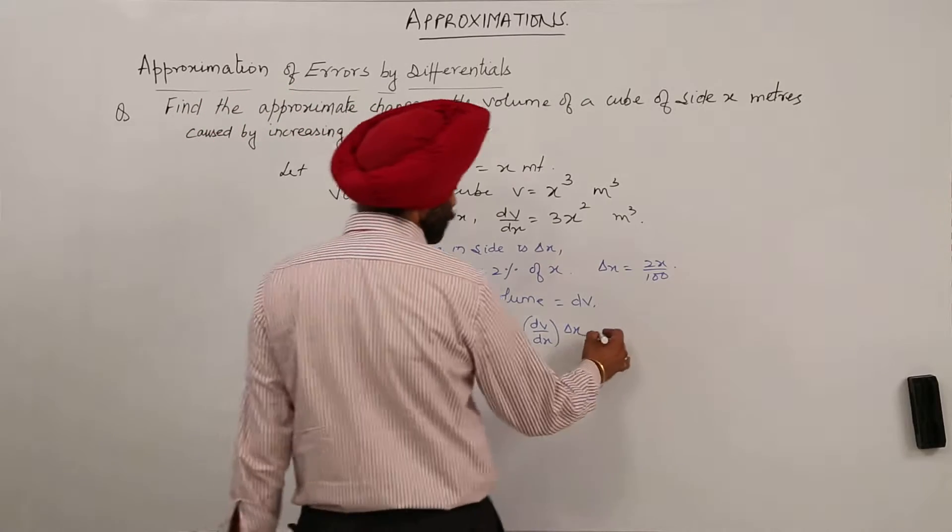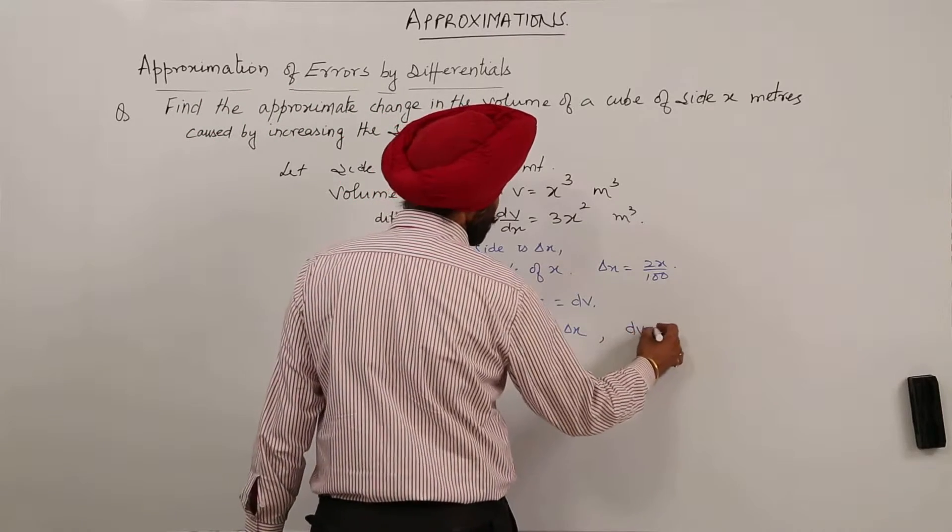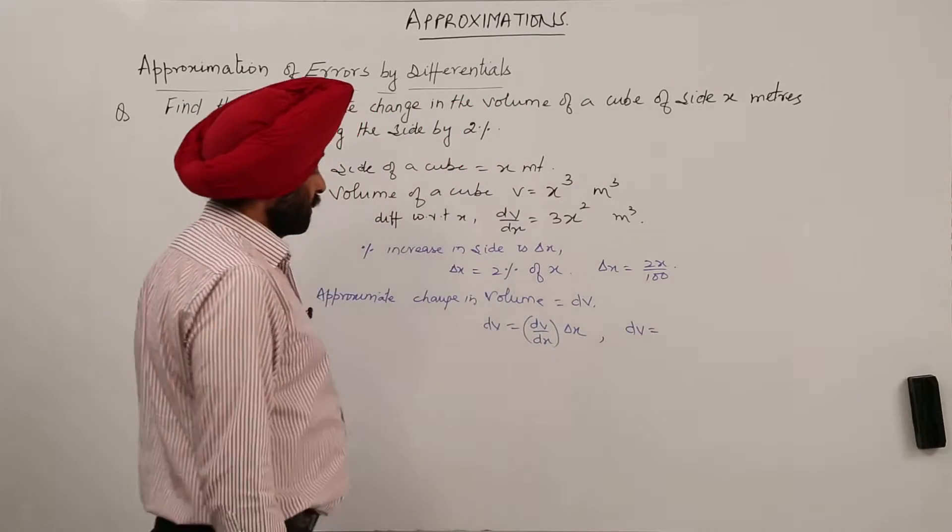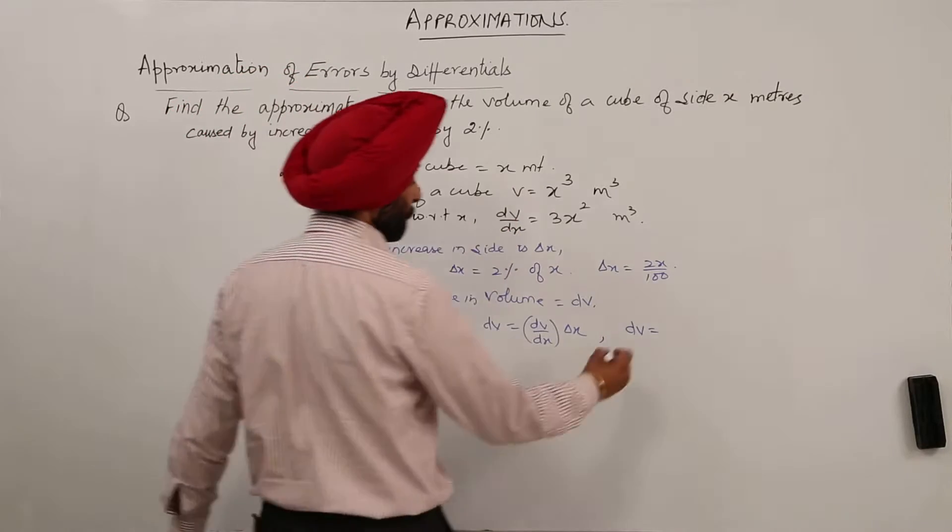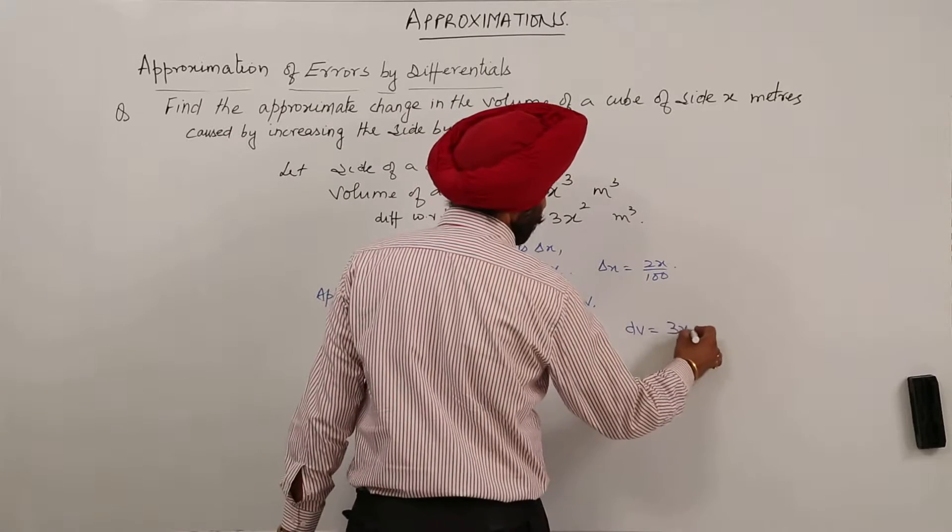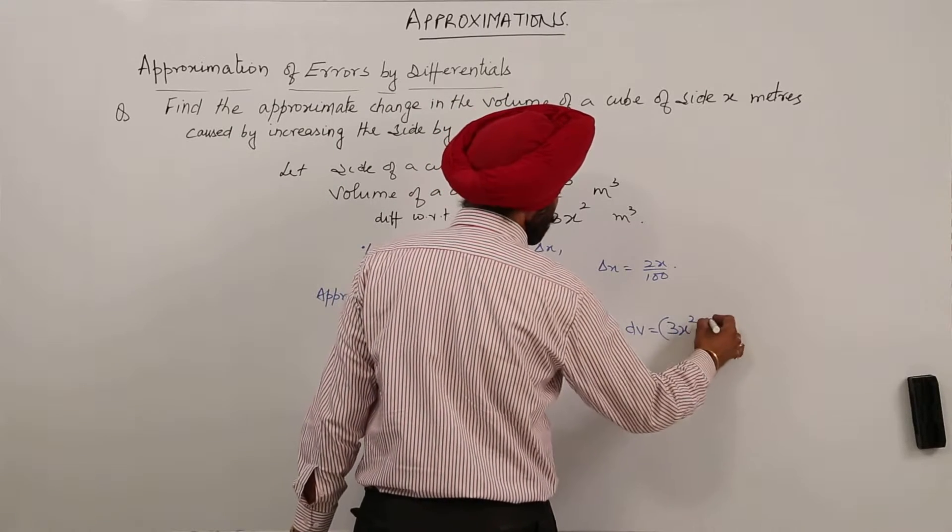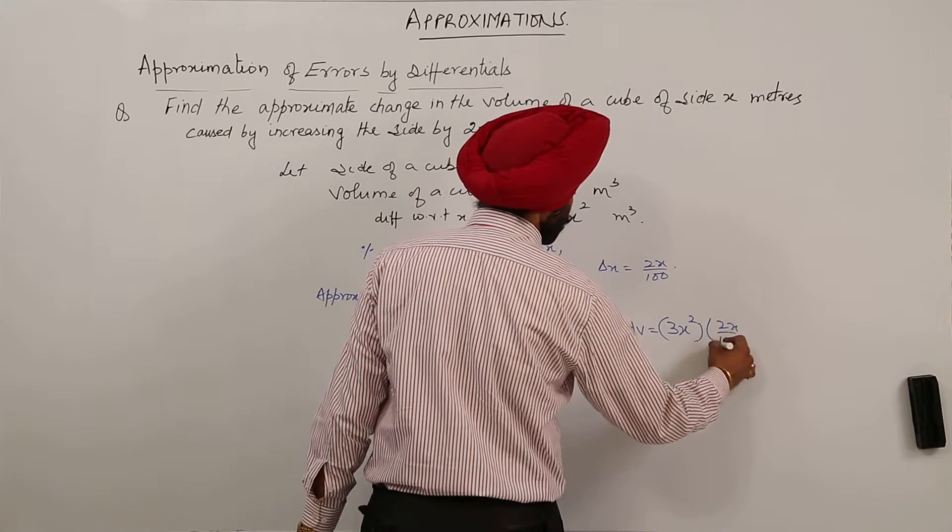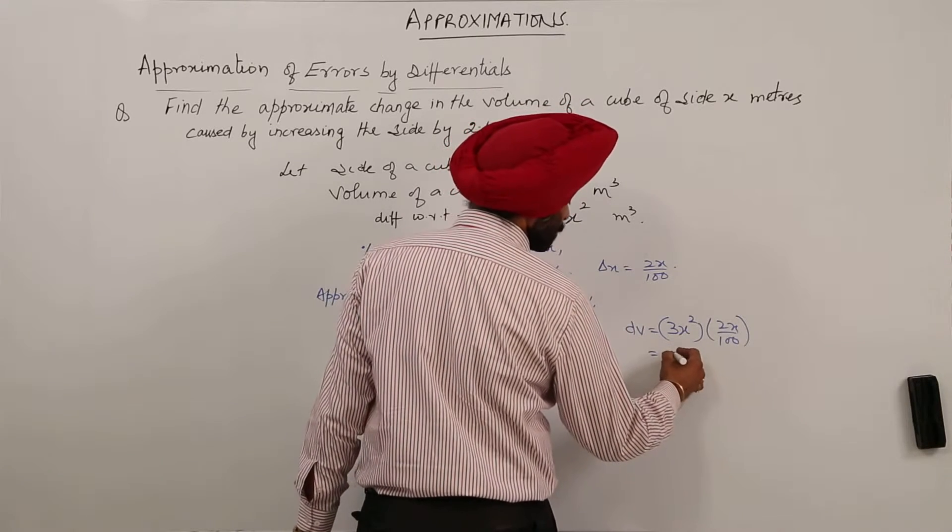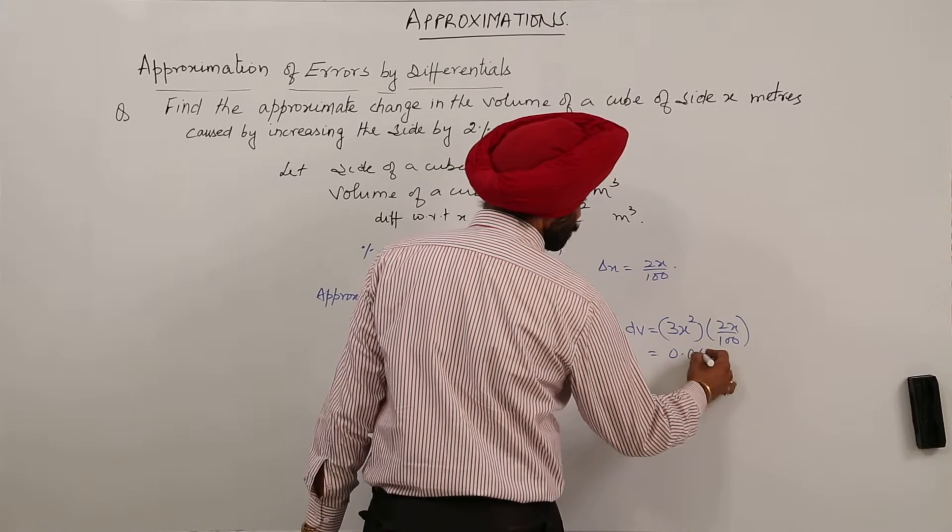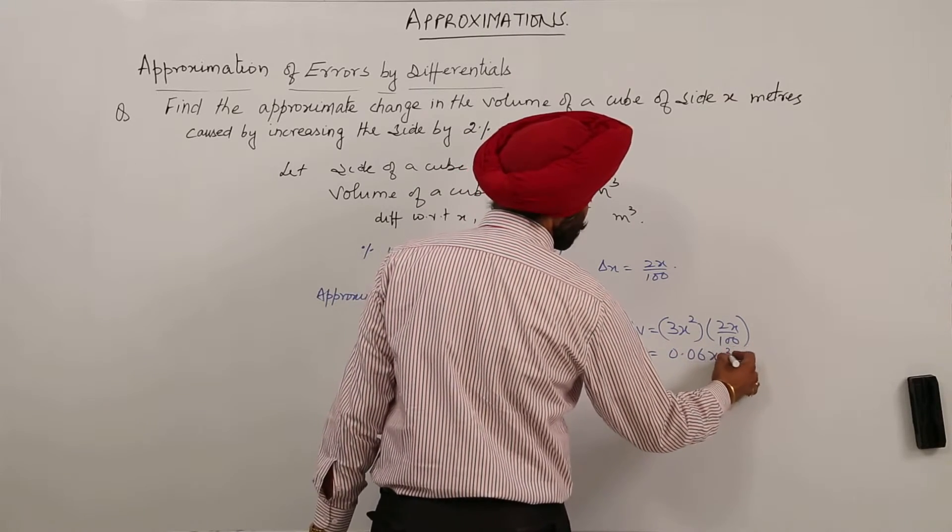Okay, so we are having now dv is equal to dv by dx. dv by dx is what? 3x square. 3x square with 2x upon 100 and this becomes 0.06 x cube.